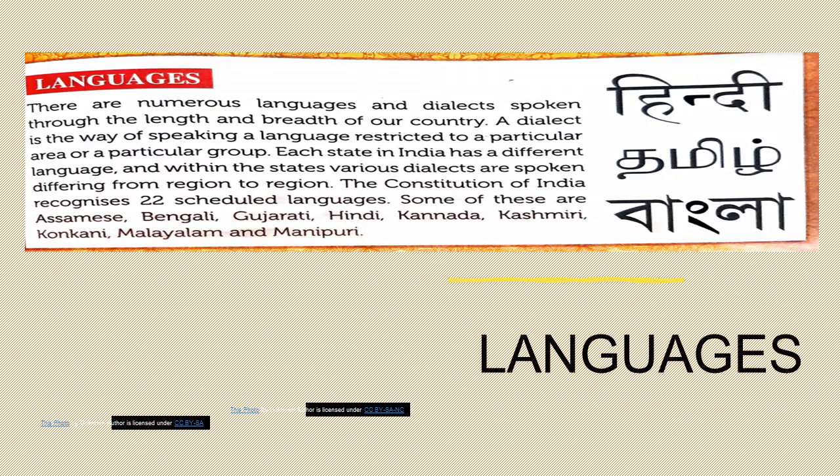In India we have 22 scheduled languages. Some of them are Assamese, Bengali, Gujarati, Hindi, Kannada, Kashmiri, Konkani, Malayalam, and Manipuri.